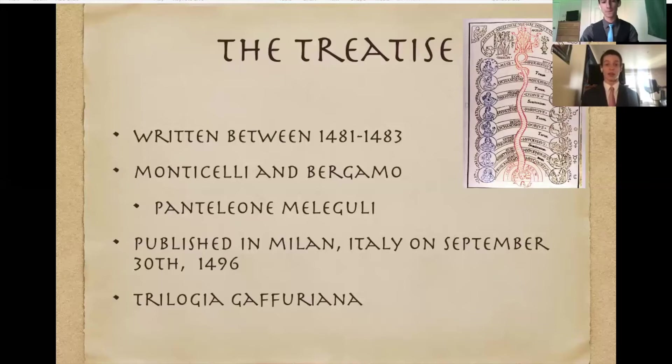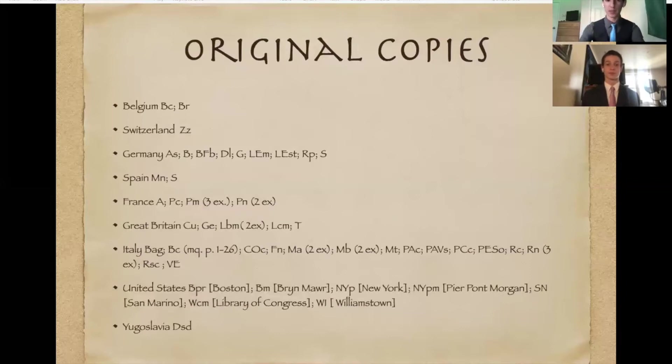And this treatise is a part of a larger group of works known as the Trilogia Gaffuriana. So the original copies, those that were printed in Milan are listed here. And this is directly from the RISM, which is pretty much the laid out exact location of all of the original copies in both country, library and city. So as you can go through here, the second from the bottom is the United States. We have seven copies, one of which resides in Boston, and there's another one which resides in the Library of Congress. If you go up to Great Britain, you can see that in the third entry, which is the London British Museum, you can see that they actually have two copies of the specific text.